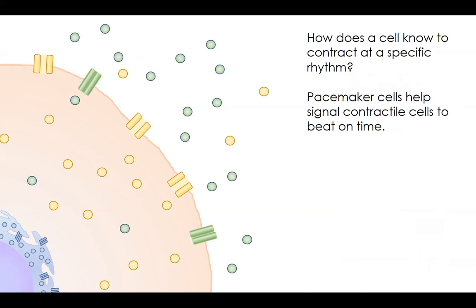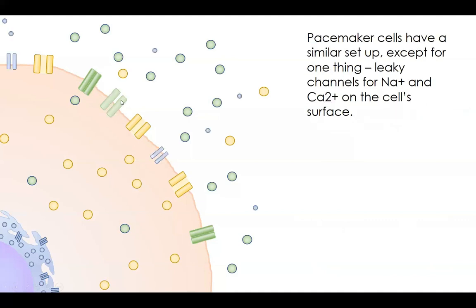Pacemaker cells help signal contractile cells to contract on time. That initial sodium influx that starts the contraction is due to signals received from neighboring pacemaker cells — they effectively tell contractile cells when to fire. Pacemaker cells are similar to contractile cells but with some key differences. In addition to the standard closed sodium channel and open potassium channel, pacemaker cells have a different kind of sodium channel and calcium channels on the surface, colored slightly differently to distinguish them.